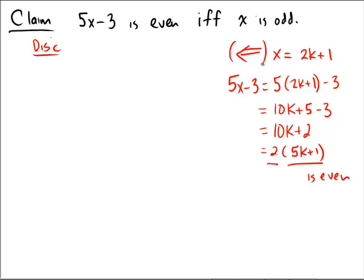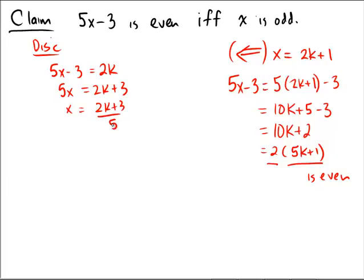That establishes the backward direction. For the forward direction, we would have to assume 5x minus 3 is even and hope that we can somehow isolate the x. But notice when we do that: 5x equals 2k plus 3, x equals 2k plus 3 over 5, and that's not looking very clean. I don't think we'll be able to establish that x is odd in any kind of simple way here.